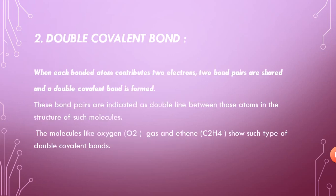How are double covalent bonds formed? A double covalent bond is formed when the bonded atoms each contribute two electrons — two bonded pairs are shared. The bond pairs are indicated as a double line, with an upper line and a lower line representing the double covalent bond. Molecules like oxygen (O₂) and ethene form double covalent bonds.